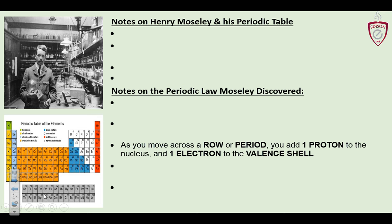As you move across a row or period, you add one proton to the nucleus and one electron to the valence shell. Every step you take toward the noble gases — group 18 on the right-hand side — there's one more proton and one more electron in each element. Moseley arranged it this way based on protons, and for neutral atoms electrons follow.